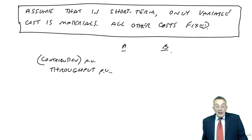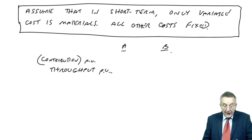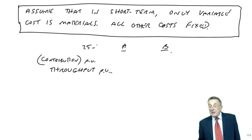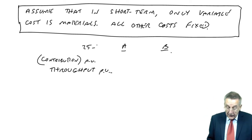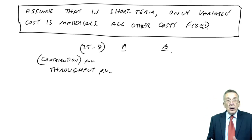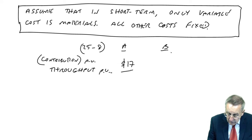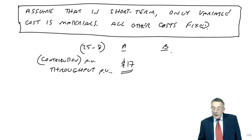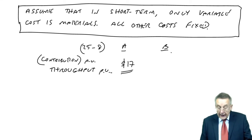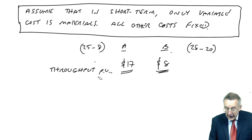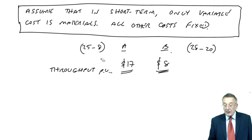The reason it's different is that the selling price is $25, but if the only variable cost is materials, and materials for A are $8, then on this definition the throughput is 25 minus 8, which is $17. And similarly for B, selling price $28, the only variable cost is materials of $20, giving a throughput per unit of $8. We no longer call it contribution, otherwise we're in danger of getting muddled — it's the throughput per unit.